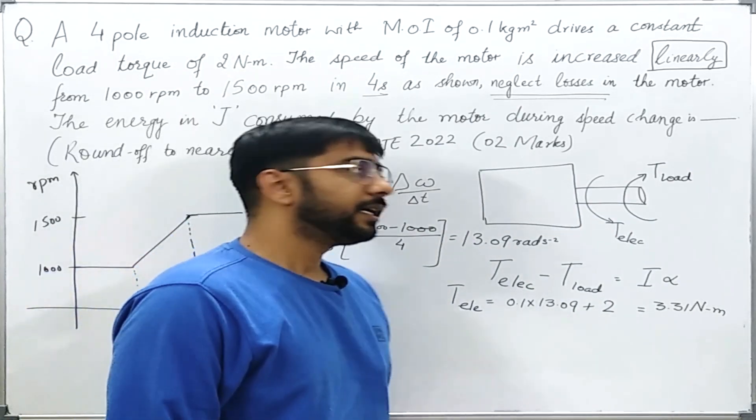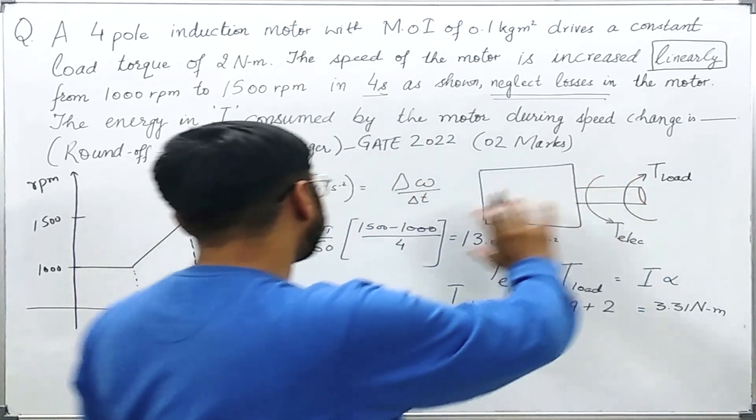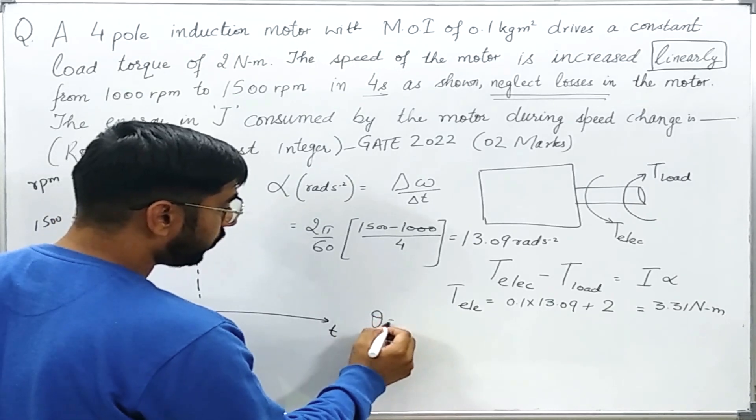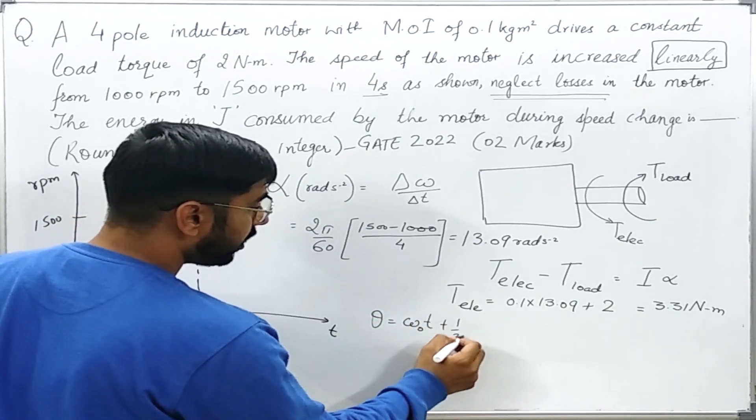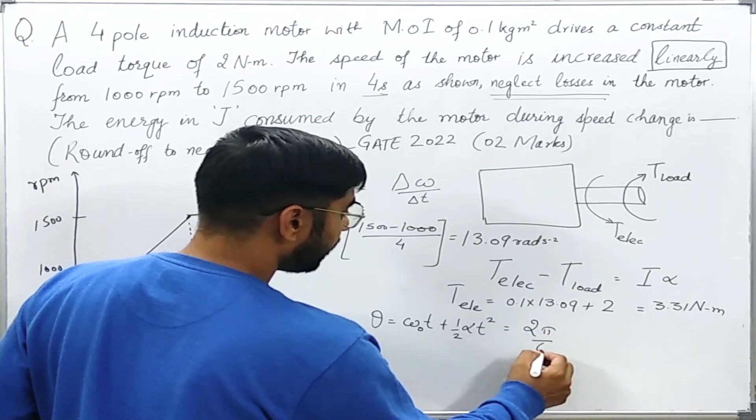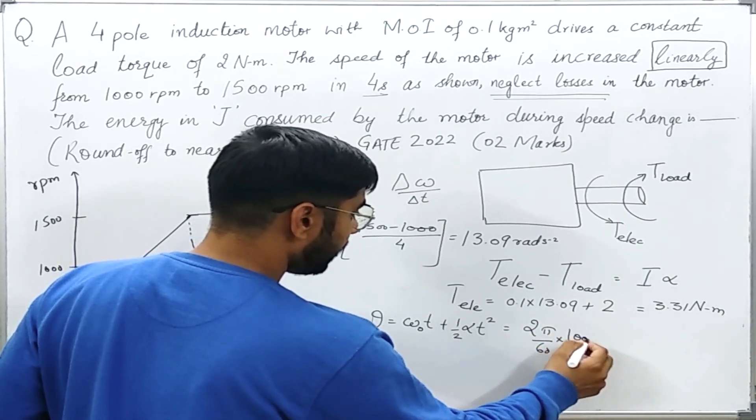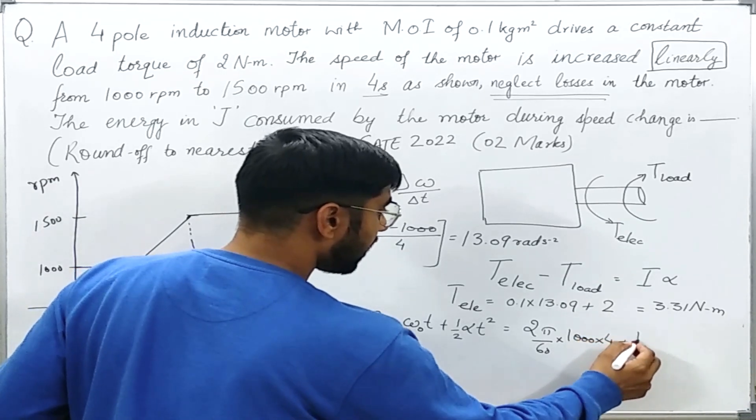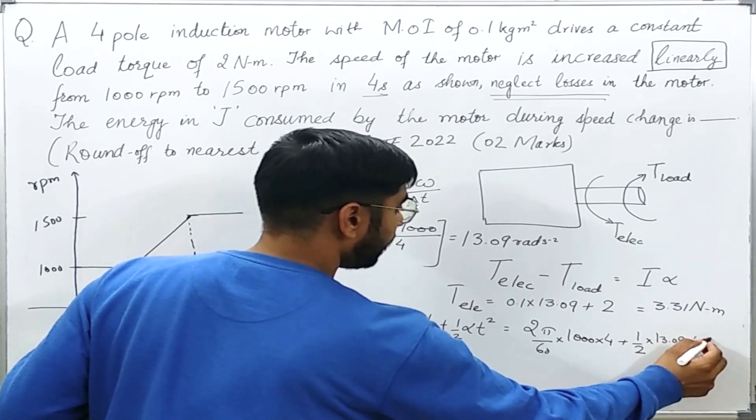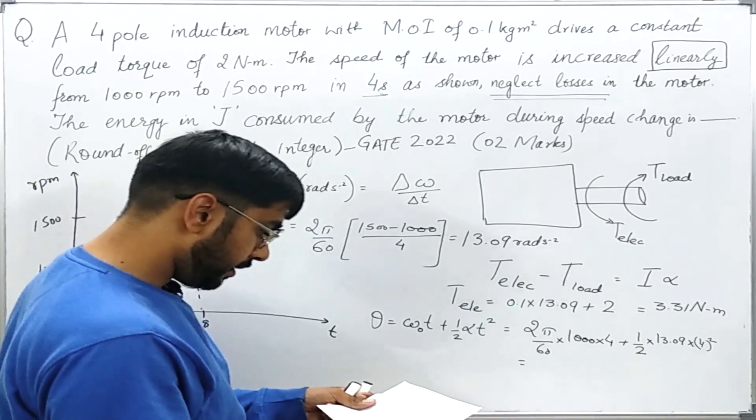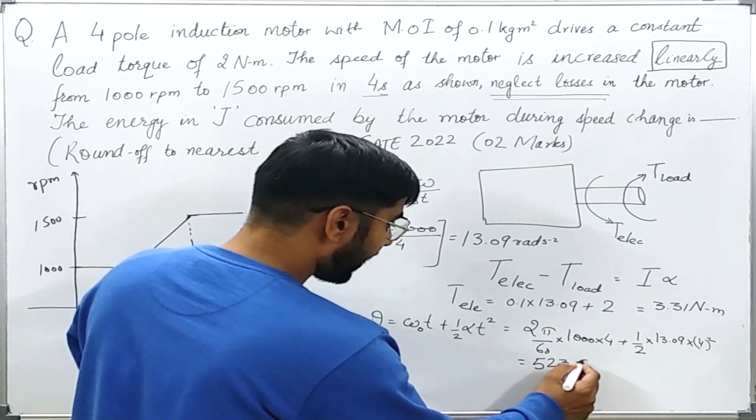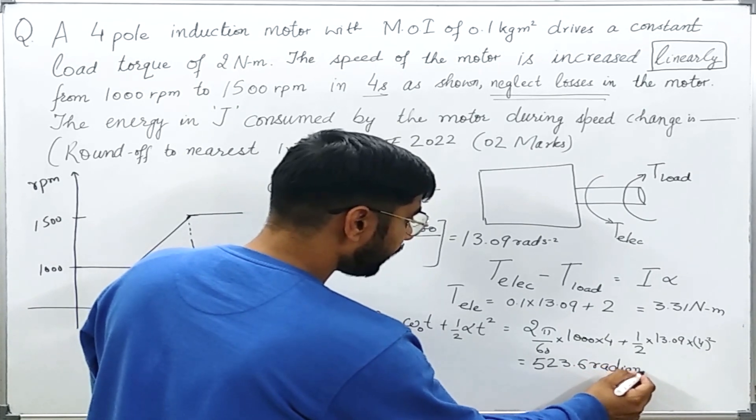Now let us see what is the angle which is covered during the instant or the duration of this 4 second. It is very easy. We can find out theta is equal to omega_0·t plus half·alpha·t squared which comes out to be 2π/60 into 1000 into 4 second plus half·alpha 13.09 into 4 squared. And this on solving comes out to be I have solved here as 523.6 radians.